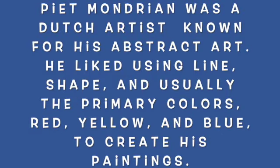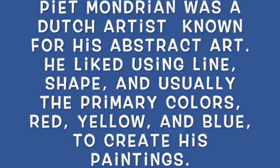Piet Mondrian was a Dutch artist known for his abstract art. He liked using line, shape, and usually the primary colors red, yellow, and blue to create his paintings.